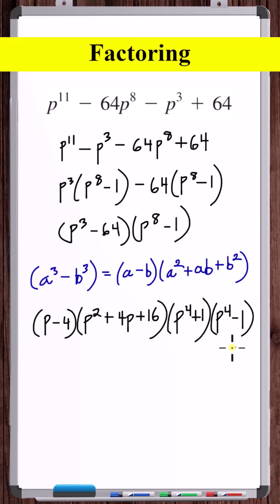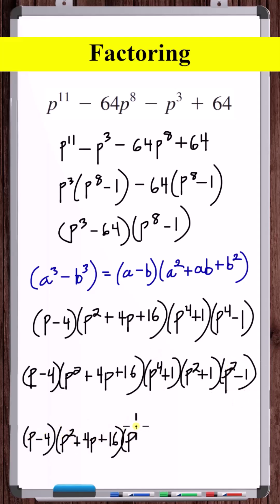Now here we've got the difference of two squares again, p squared squared minus one squared. So p squared plus one times p squared minus one. We've got the difference of two squares again, and that's fully factored.